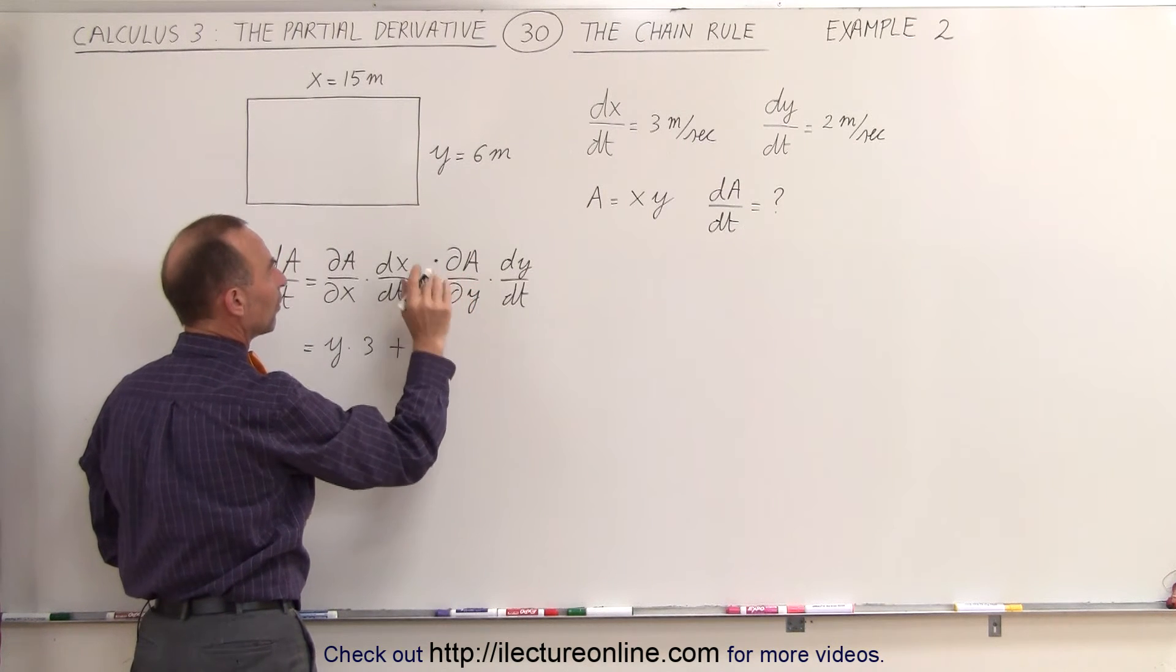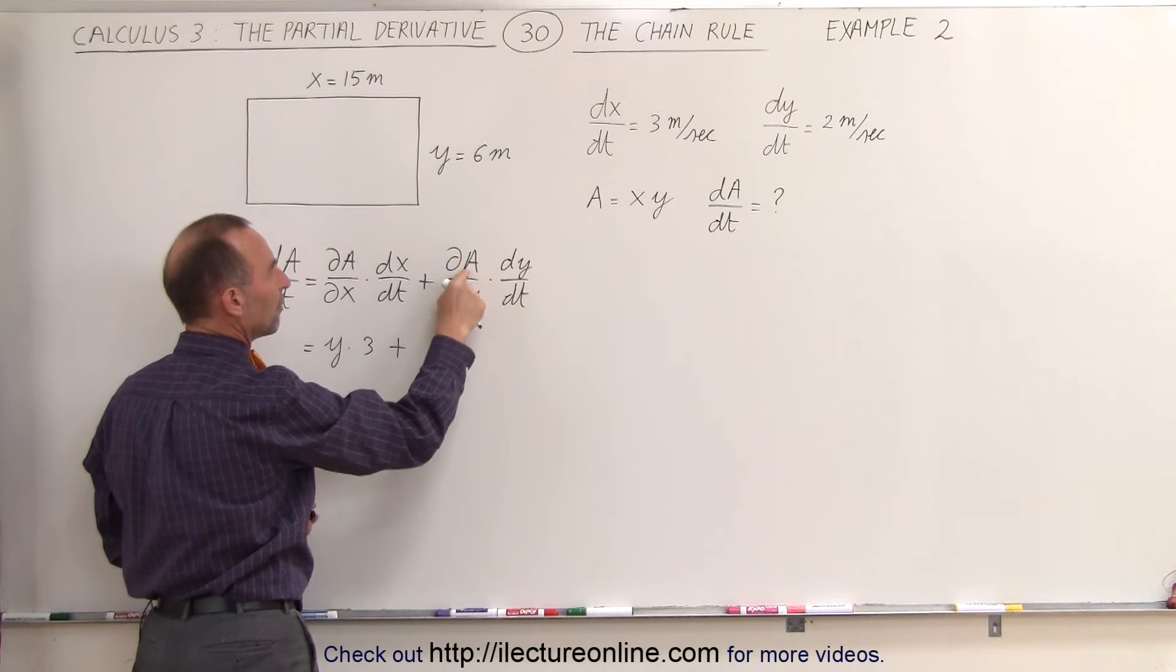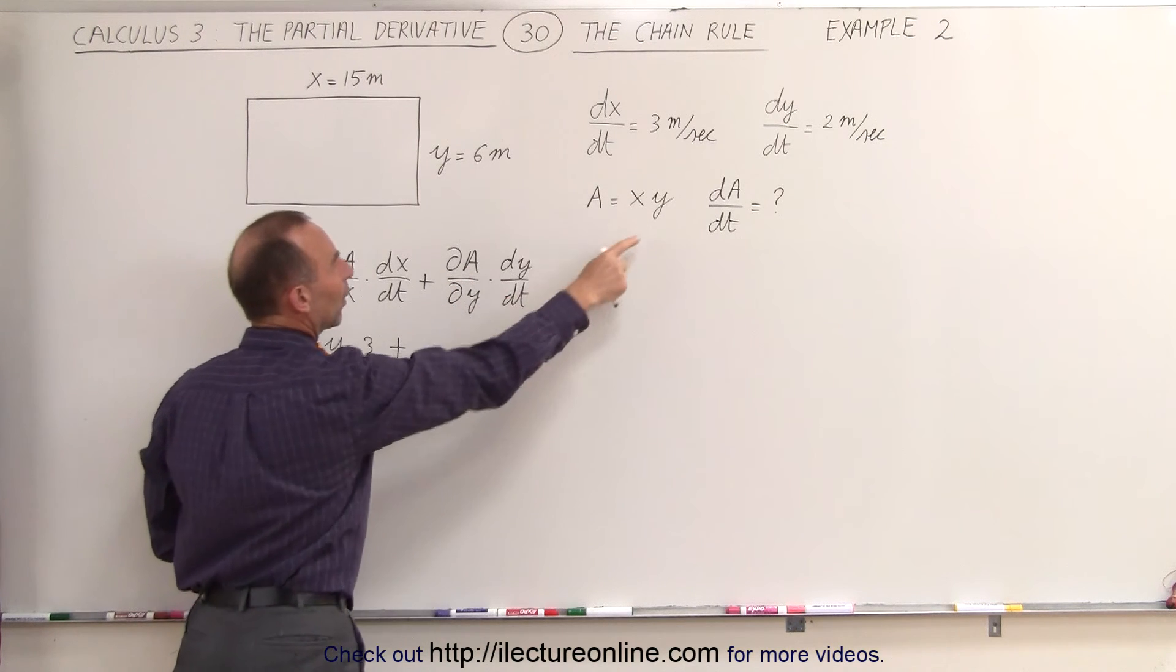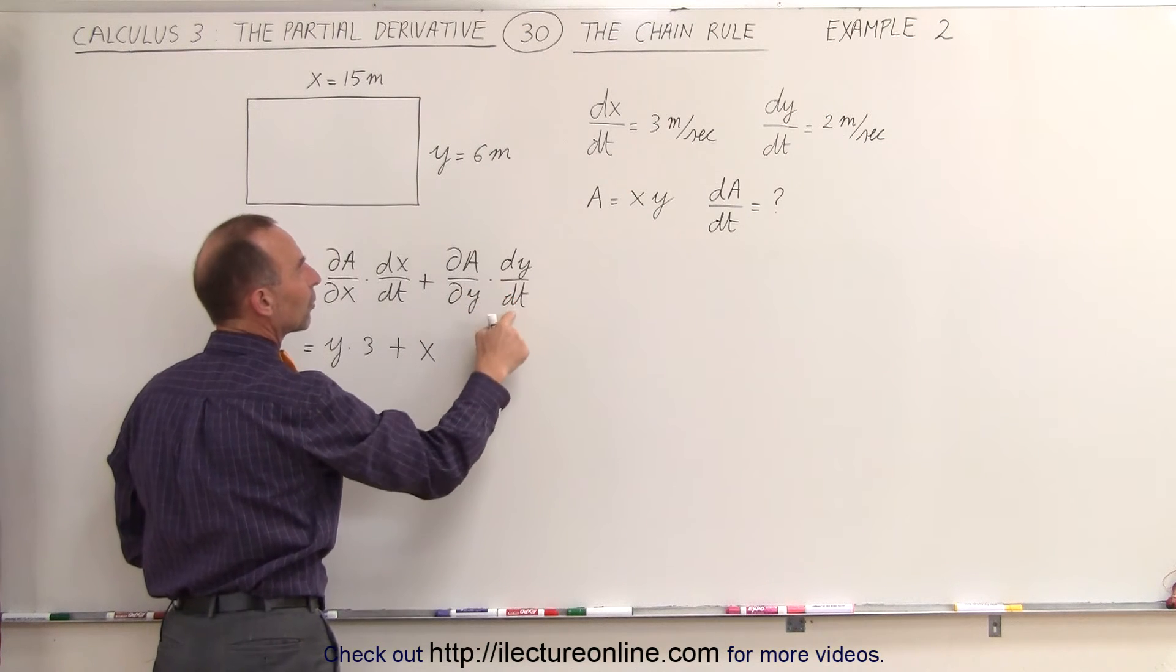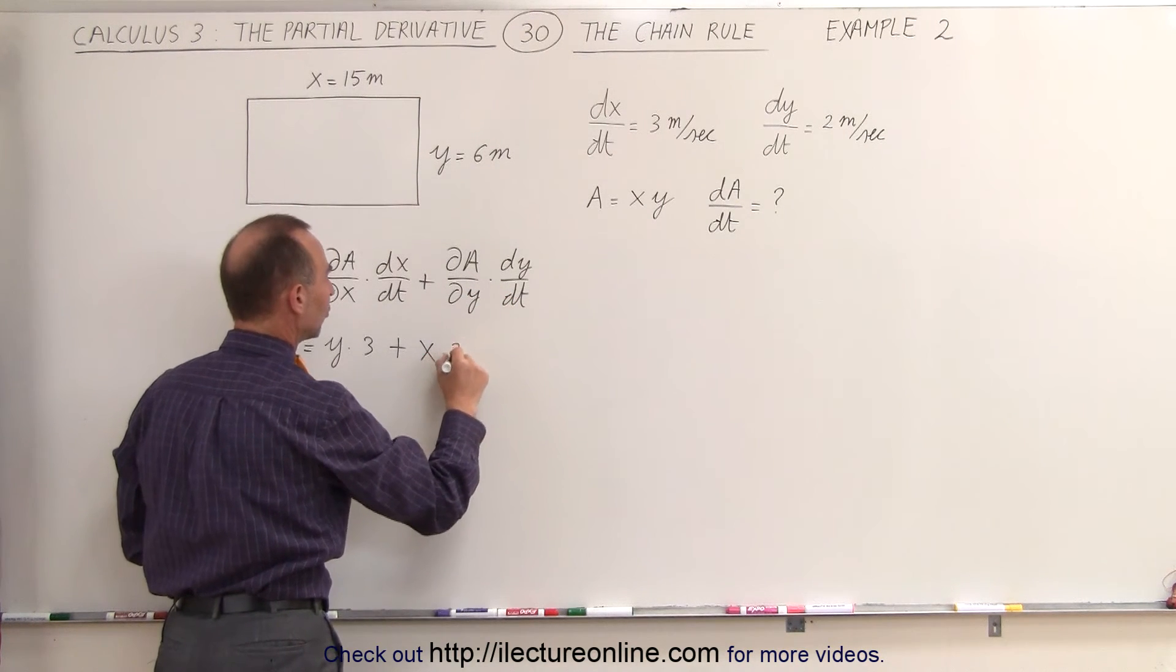Plus the partial derivative of a with respect to y. In this case, y is the variable, x is the constant, so we get x times the change in y with respect to time, which is times 2.